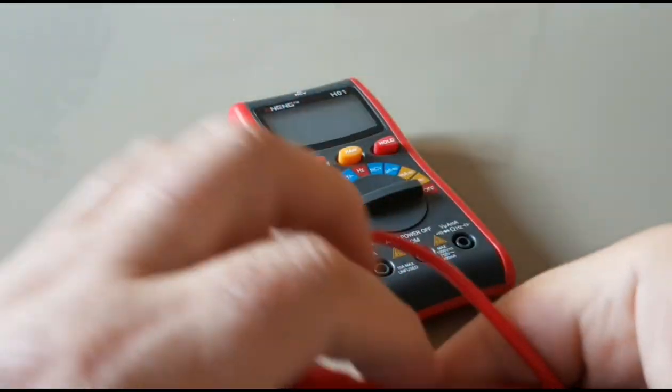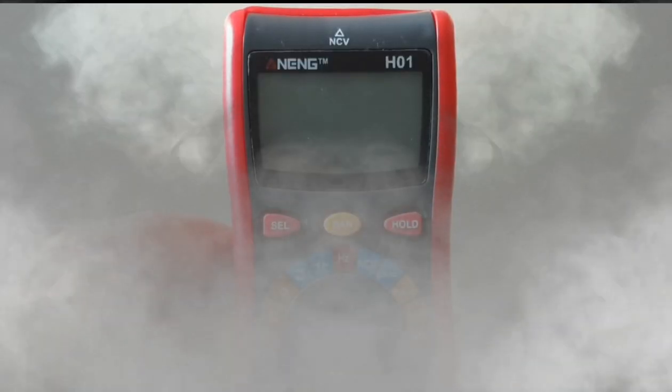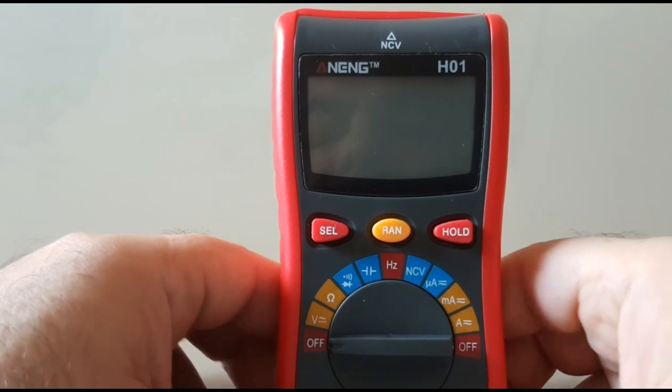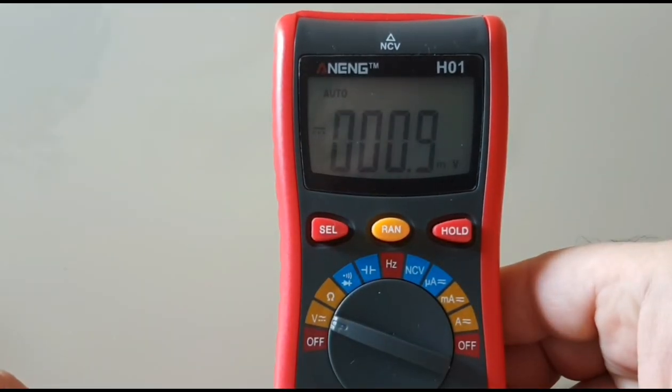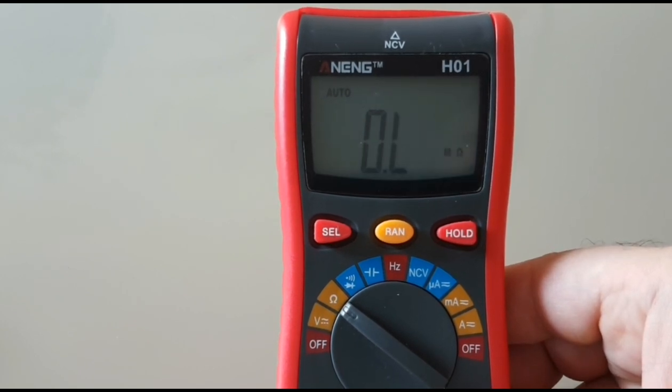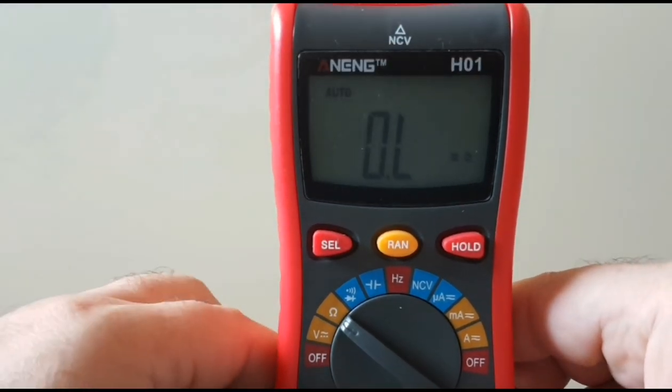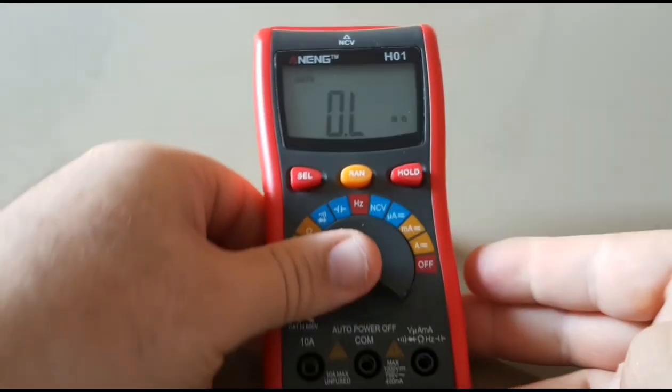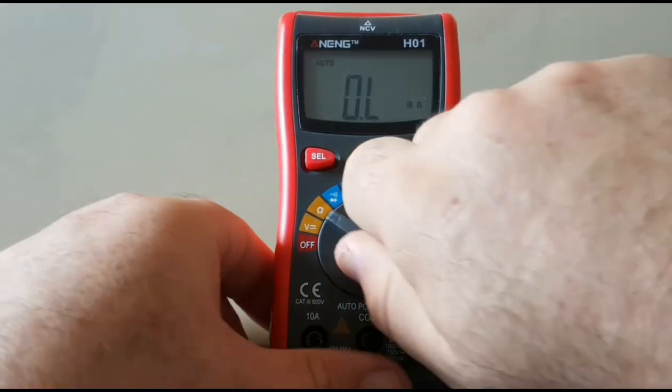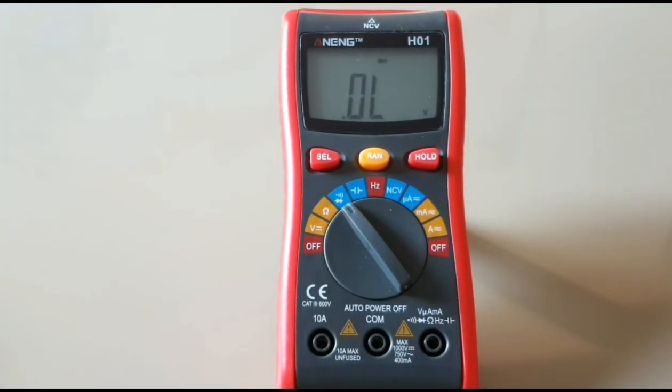I have seen some half decent leads coming out of China with the cheap multimeters as of late, but unfortunately not with the Anang H01. Now this is 4,000 count auto ranging multimeter. Starting off with the volts AC DC followed by resistance, this does up to a whopping 40 mega ohms. That's one of my pet peeves with this particular multimeter, in terms of actual specifications it kind of sucks.